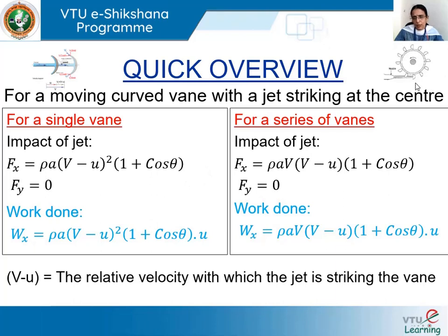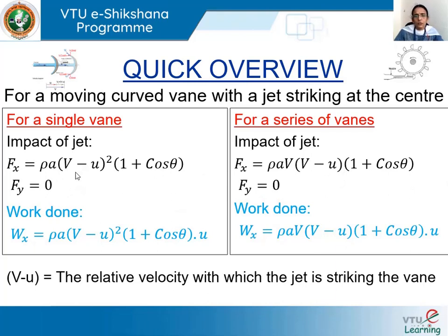If there are a series of curved vanes mounted on a wheel and the jet strikes the vane at its center, the force is given by ρav(v−u)(1 + cosθ). In this case there is no mass loss because a vane is always present in front of the jet, so the mass striking is always ρav, while the velocity of impact is the relative velocity v−u. In both cases the impact of jet is expressed as a function of the relative velocity, since vane and jet velocities are in the same direction, giving relative velocity simply as v minus u.